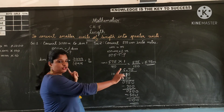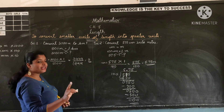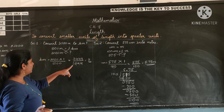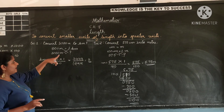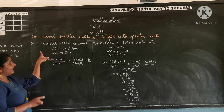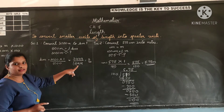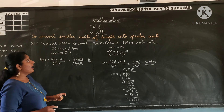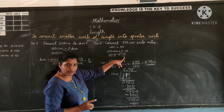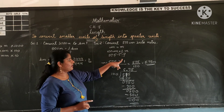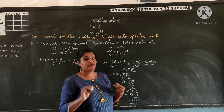If you observe these two examples carefully, you can see that to convert smaller units into greater units — meters into kilometers — we divided by 1000, and to convert centimeters into meters, we divided by 100. Let us see one more example.